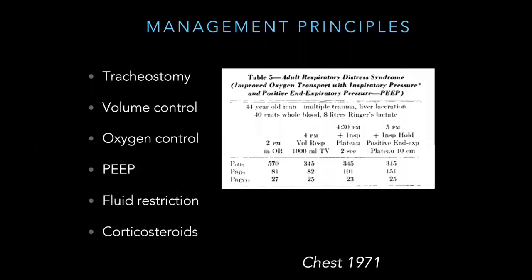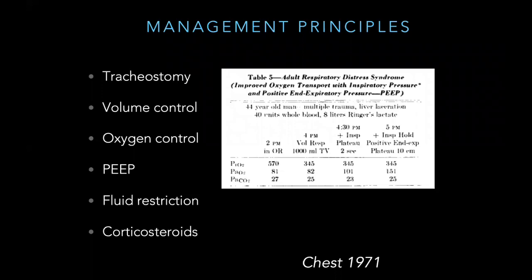A typical example: a 44-year-old polytrauma patient with multiple injuries including a liver laceration, who had received 40 units of blood and eight liters of Ringer's lactate. It's no wonder his X-ray showed bilateral infiltrates, but he was classified as having ARDS and was profoundly hypoxemic. He was transferred to ICU, placed on the ventilator in volume control mode, and the tidal volume was set at 1000 mL.